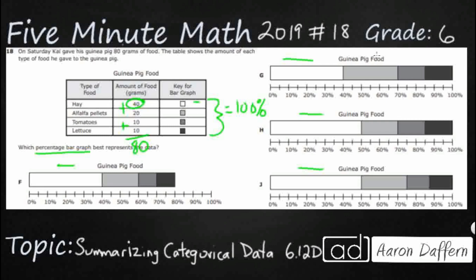So hay, let's just put that right here, it's 40 grams out of 80 total. And then alfalfa pellets, I'll go ahead and put A right there, that's 20 grams out of 80 total.